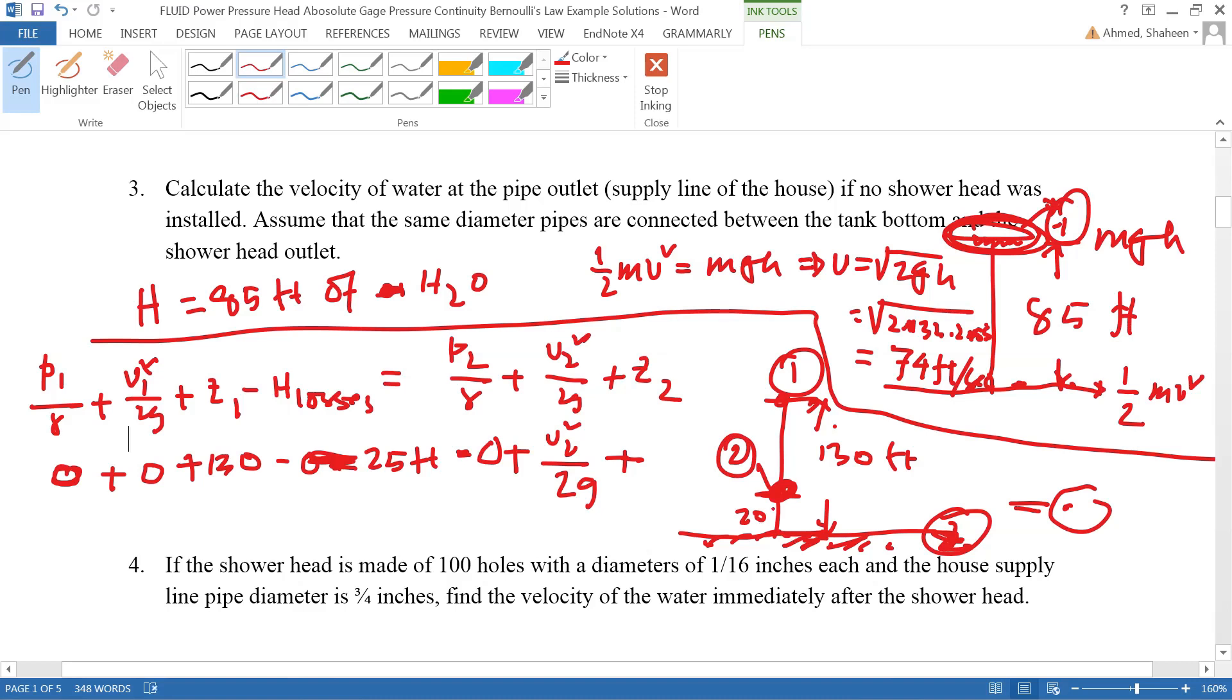So from the ground, that point 2 is 20 feet high. So basically it's the same thing, v2 squared would be equal to 2g and then basically 85 left. It's the same 85 here and here. So if you solve for v2, it's going to be 74 feet per second.